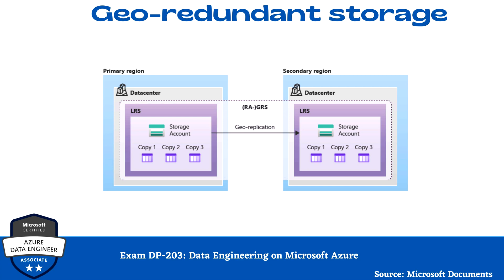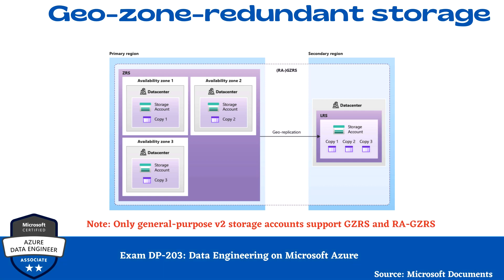Now we are going to talk about Geo-Zone Redundant Storage. Please pay attention to the screenshot on your screen. GZRS combines the high availability provided by redundancy across availability zones with protection from regional outages provided by geo-replication. Data in a GZRS storage account is copied across Azure Availability Zones in the primary region and is also replicated to a secondary geographic region for protection from regional disasters. Microsoft recommends using GZRS for applications requiring maximum consistency, durability, availability, excellent performance, and resilience for disaster recovery — providing up to 16 nines of high availability per year.